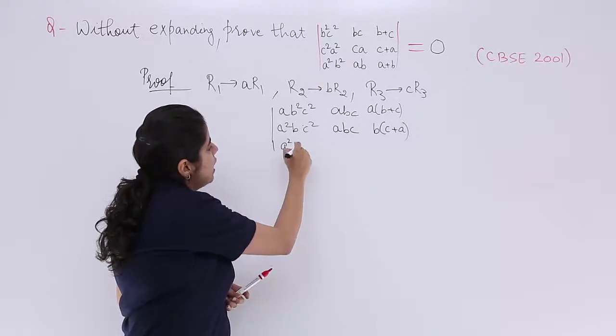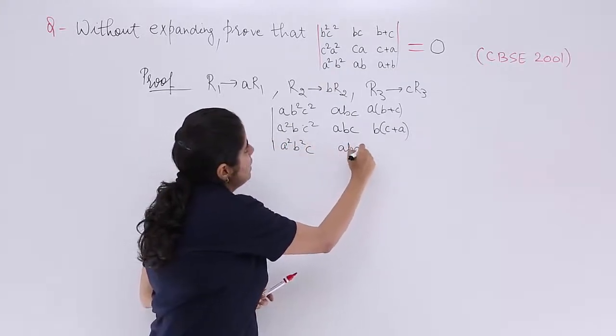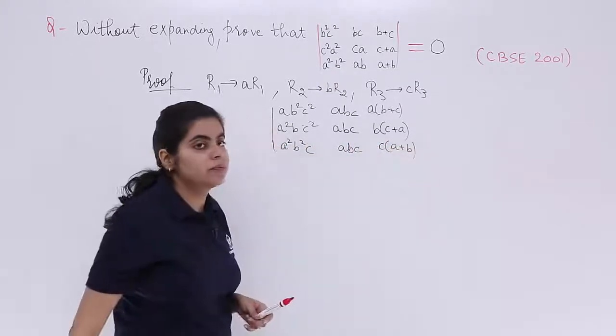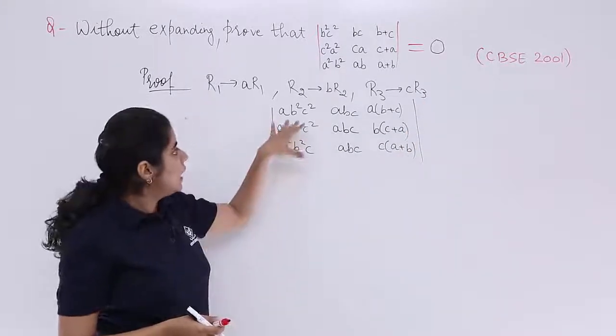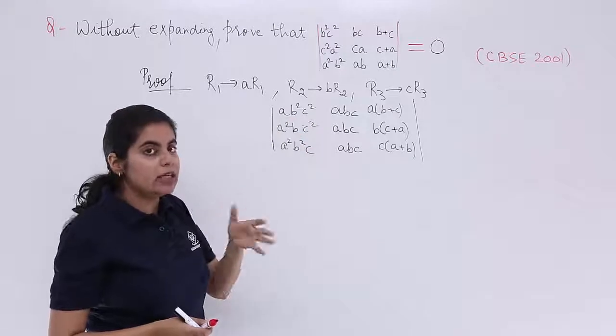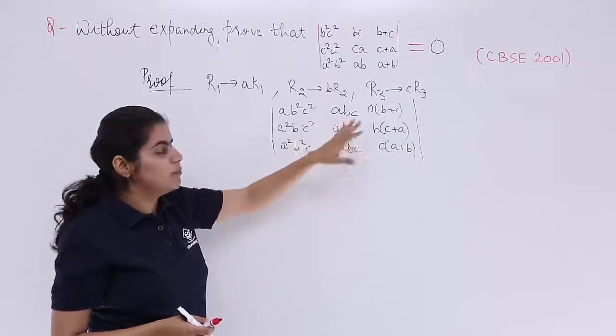Now you see ABC, everything is now there. Here also it's A, B, C. What if I take ABC common?